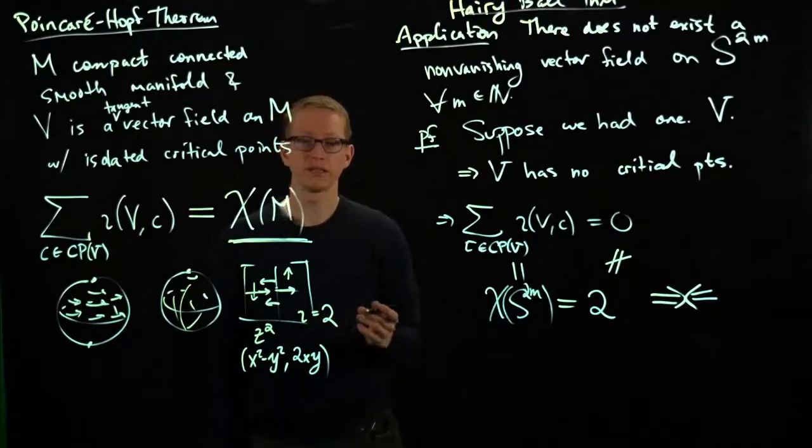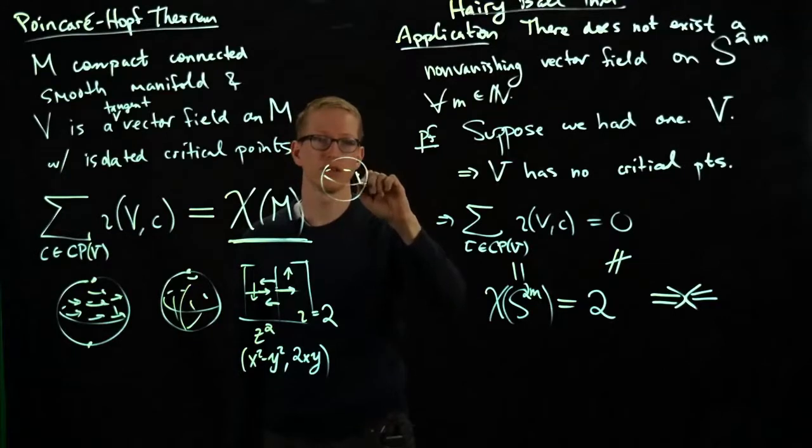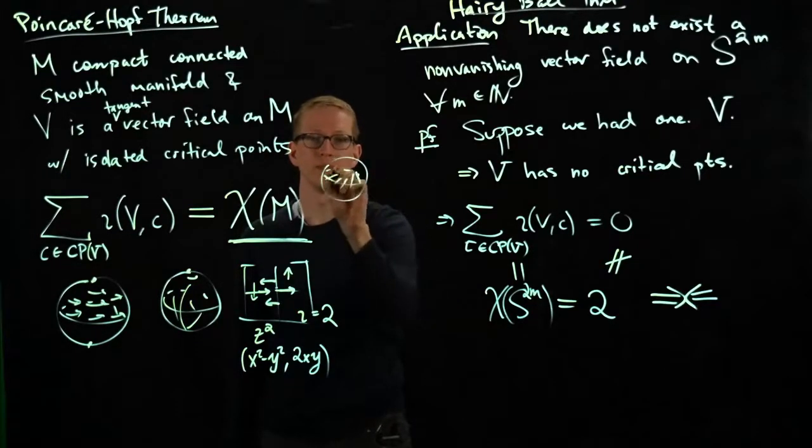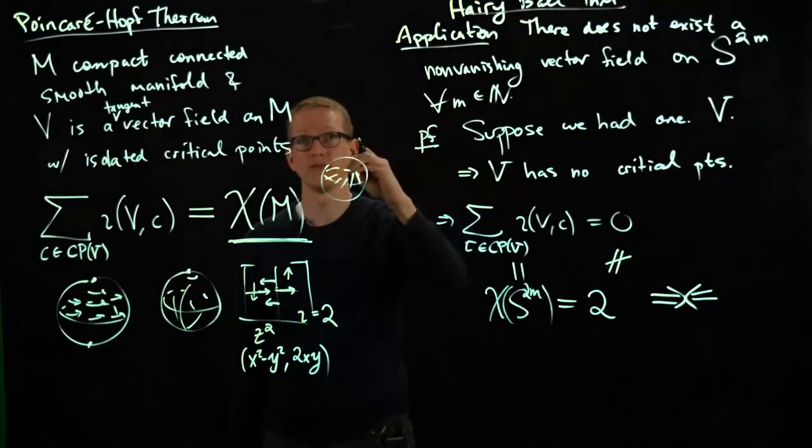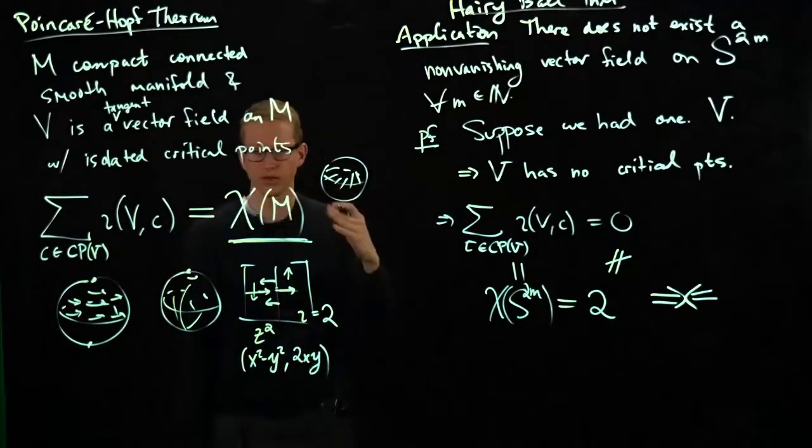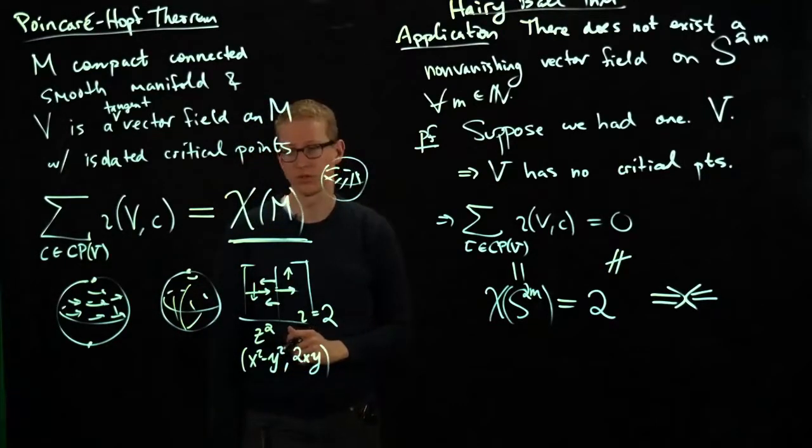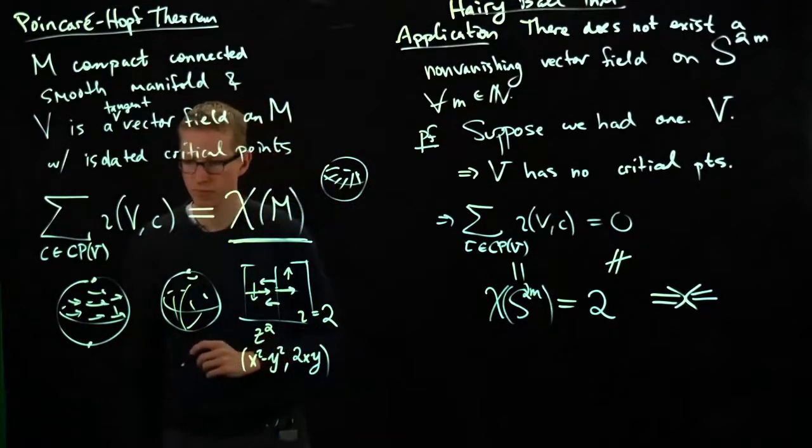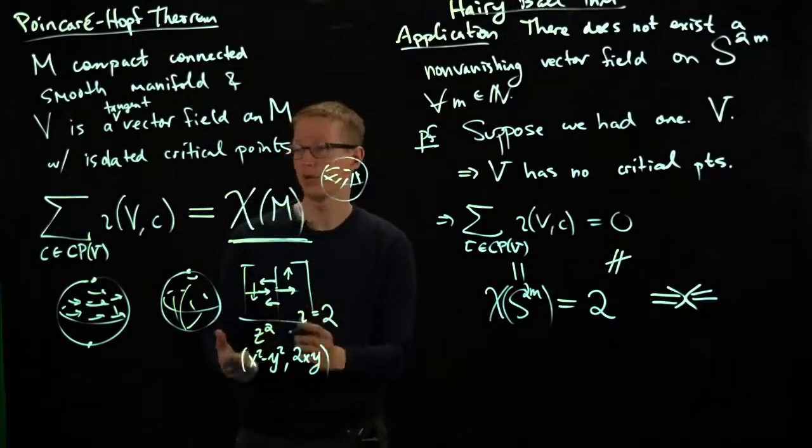because it's related to the fact that if I take a sphere and I take a bunch of tangent vectors at every point, there's no way that you can comb this without having one of these vectors vanish. So you can't comb the hairs on an even dimensional sphere.